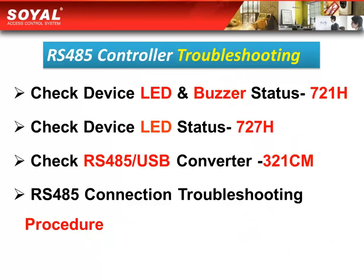We will show you how to check the 727H device and converter 321CM by observing the LED status. We will also provide the procedure of how to understand the status of the RS485 connection.